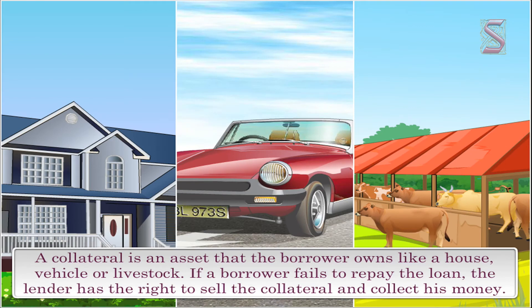In one situation the credit system helps a person to flourish financially, while in the second case the borrower was pushed into a debt trap. Just because there is always a risk that the borrower may or may not be able to repay the money, lenders or banks do not offer loans just like that — there are certain terms and conditions which have to be met. They ask for collateral as security against the loans. A collateral is an asset that the borrower owns, like a house, vehicle, or livestock. If a borrower fails to repay the loan, the lender has the right to sell the collateral and collect his money.